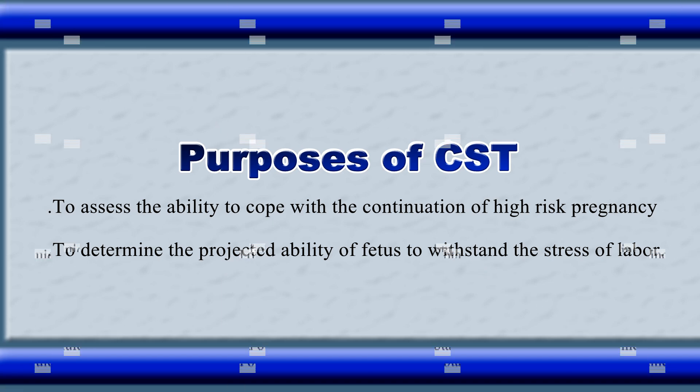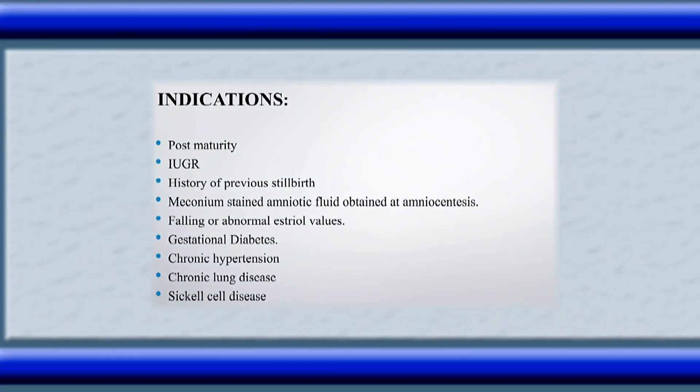The indications of contraction stress test are: post-maturity, IUGR, history of previous stillbirth, meconium-stained amniotic fluid obtained at amniocentesis, falling or abnormal estriol value, gestational diabetes, chronic hypertension, chronic lung disease, and sickle cell disease.